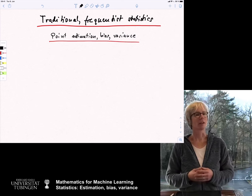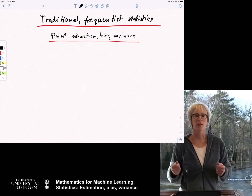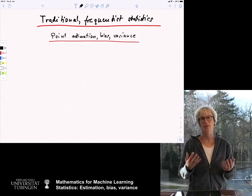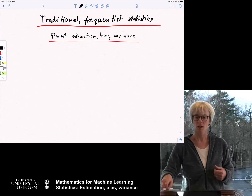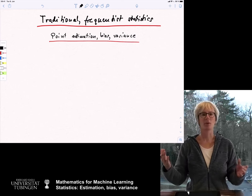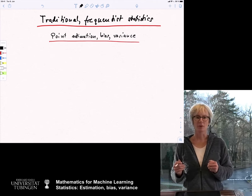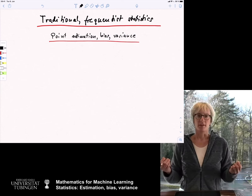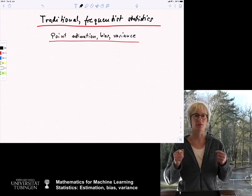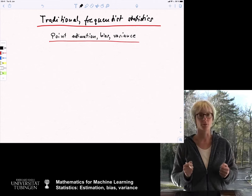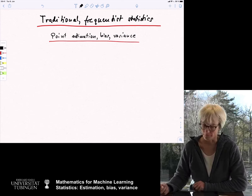Today we start with the very traditional approach. We are going to start with what is a statistical model, and then in this lecture look at estimation — in particular point estimation — and what is the bias and the variance of such an estimate. So the typical way traditional statistics is set up is that there is a family of distributions, and you assume that your data is generated by one of the members of this family, and you want to identify the correct distribution based on a sample you have observed.